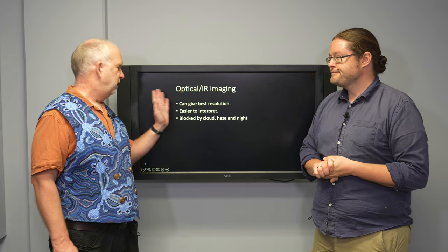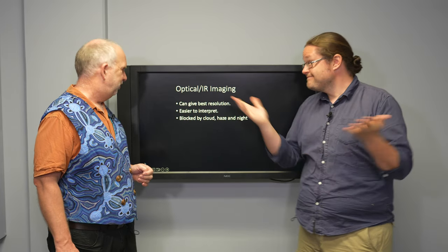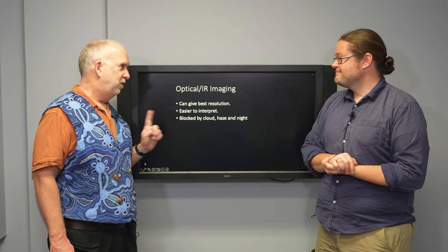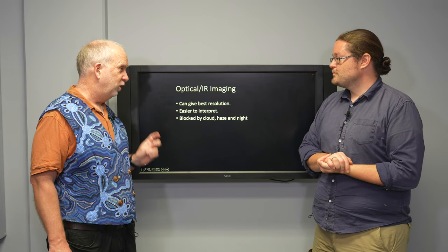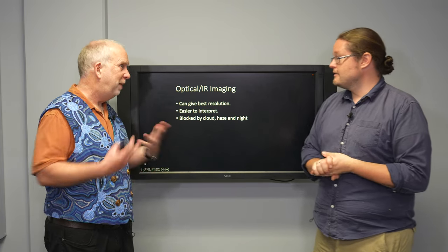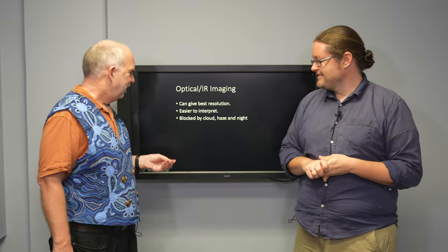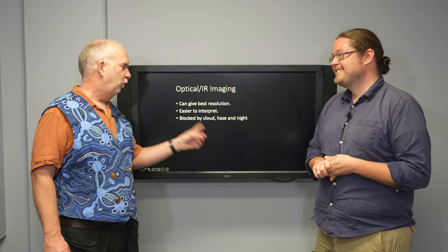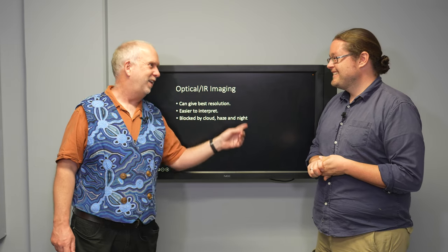So normally when we think of remote sensing, we're thinking of optical images like photographs that you might see with the human eye. Now the benefit of this is it gives often the best resolution. You can see sharp details, it's easy to interpret. It's a picture. Yeah, exactly, and humans evolved to look at pictures. The trouble is it's blocked by clouds, haze and night.